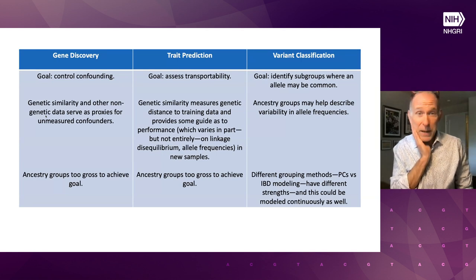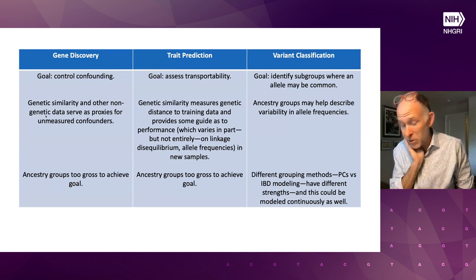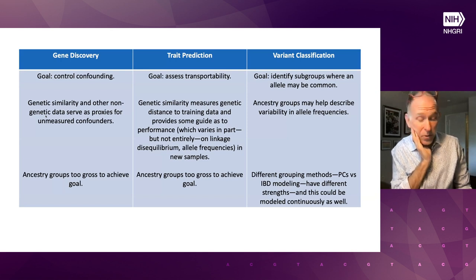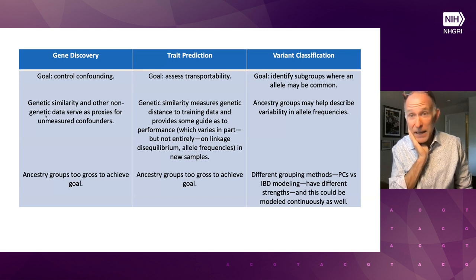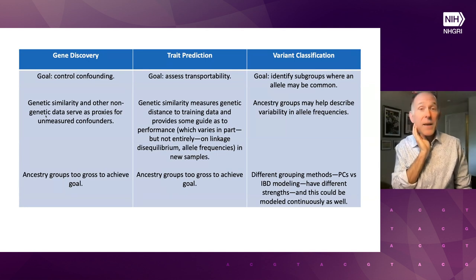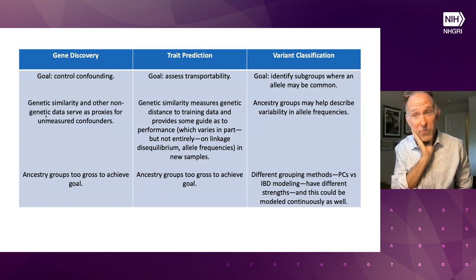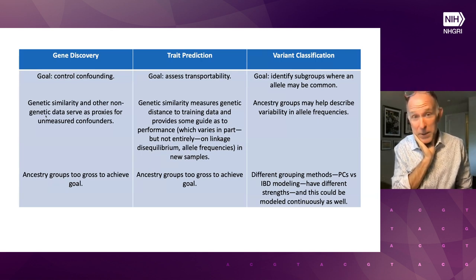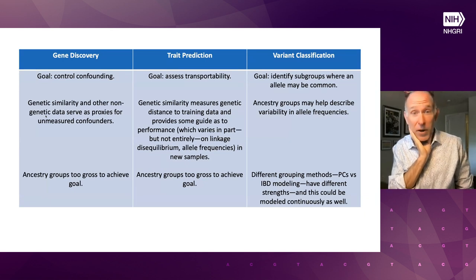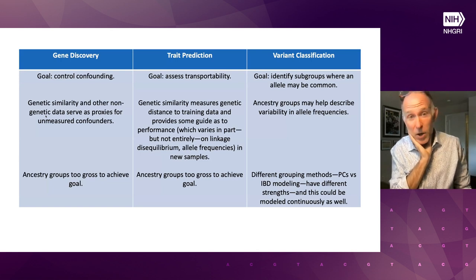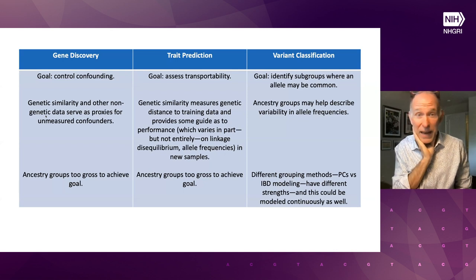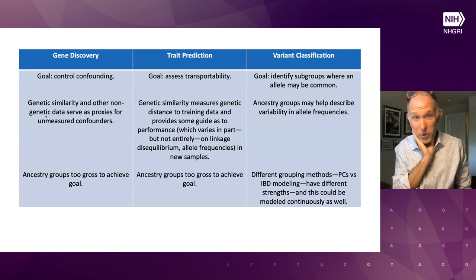Catherine gave an example from the gnomAD project of another use case: variant classification. It may be relevant to know if a particular allele is common in any subgroup. In the overall gnomAD sample it may be very rare, but there may be a subset of folks where it's actually common, which would have implications for inferring pathogenicity. Ancestry groups may help describe some of that variability in allele frequencies. But there are different grouping methods — whether you're using principal components as gnomAD has, or doing some sort of IBD modeling as the folks at BioMe have — each will have different strengths and may be better or less well suited for your particular application.